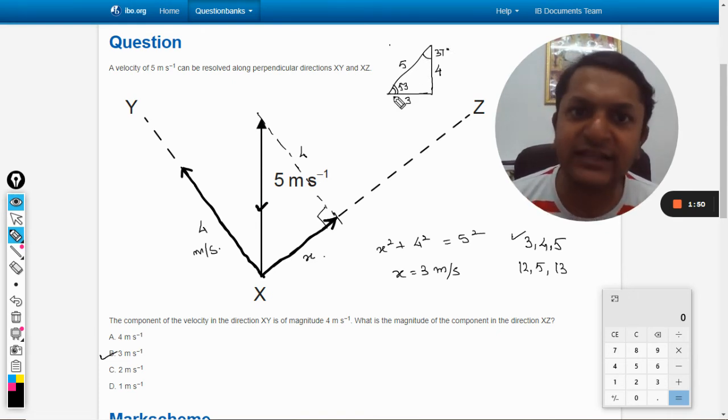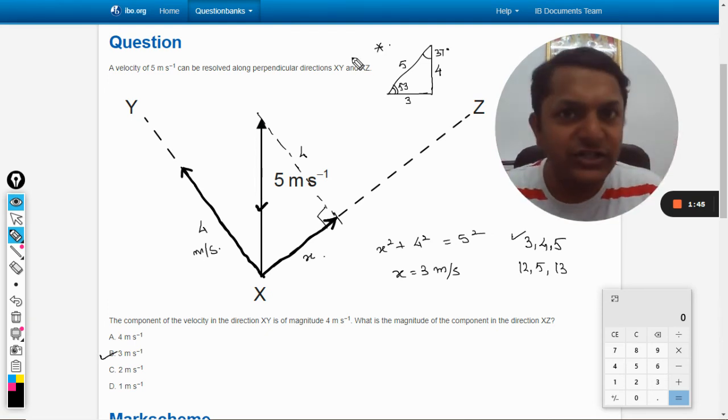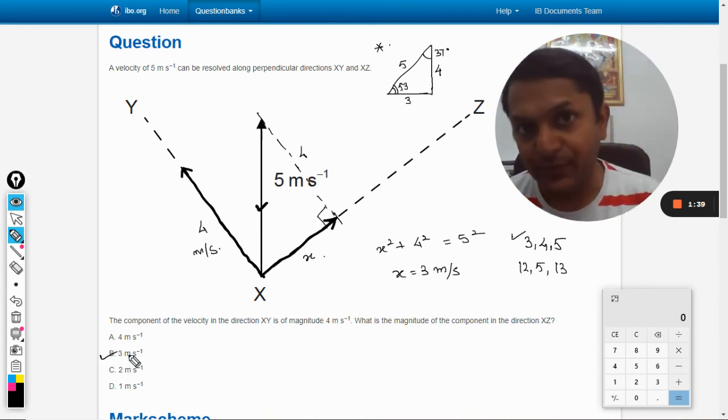This angle automatically comes out to be 37° because both of these angles are complementary. This triangle is very important, and you can just remember this triangle. You would be getting these kind of questions; you can straightaway take answer 3.